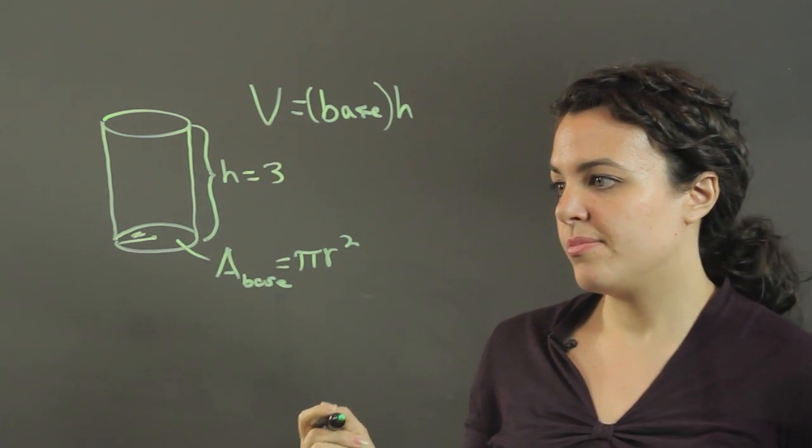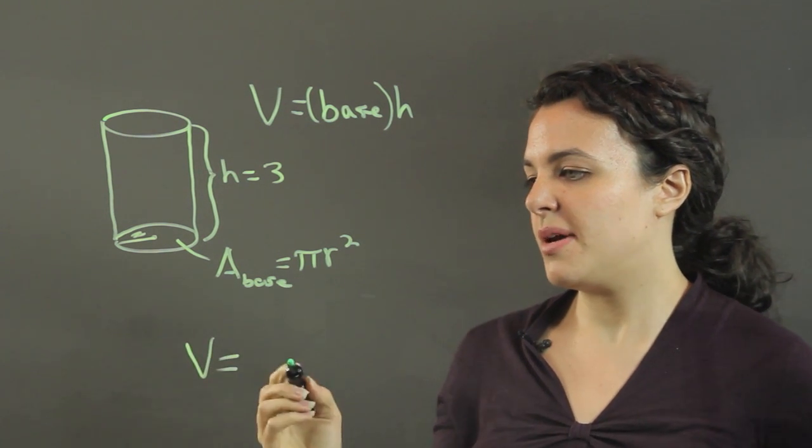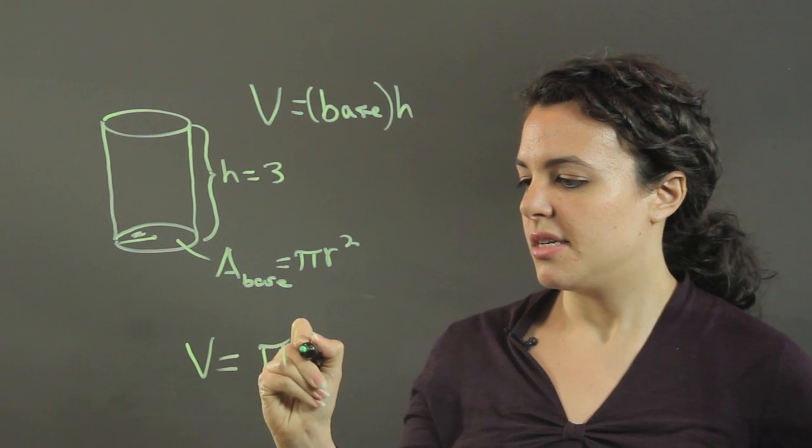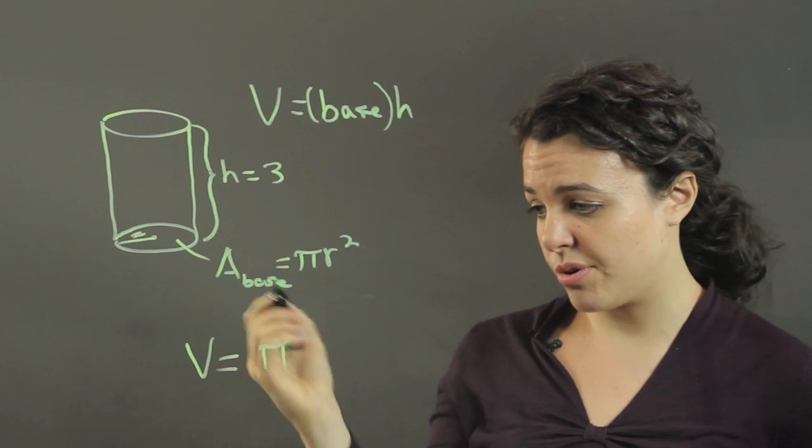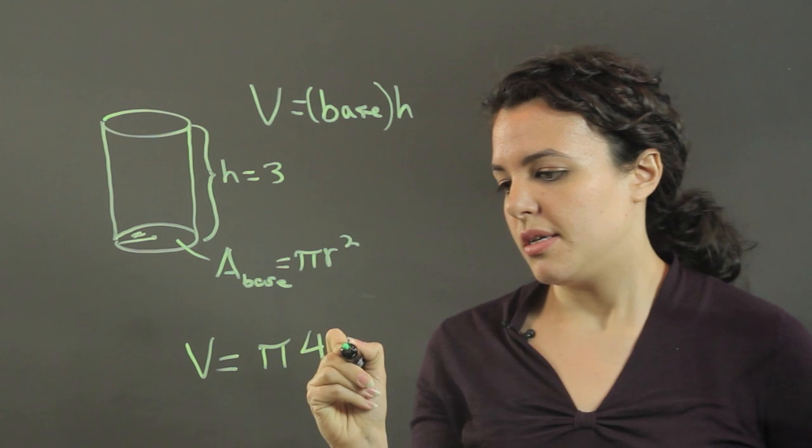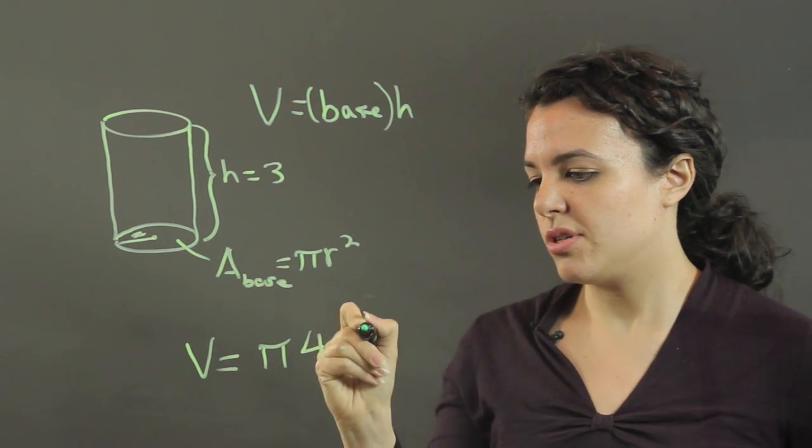Our volume is the area of the base, which is pi times 2 squared. Since r is 2, r squared is 4, times the height, which is 3.